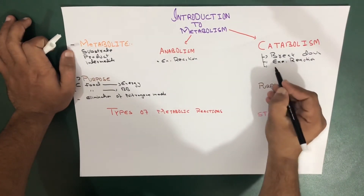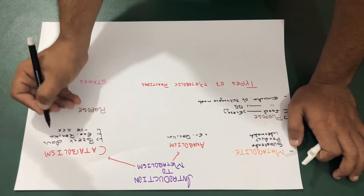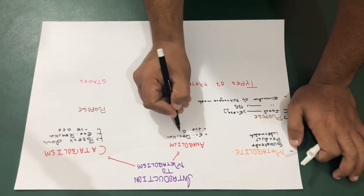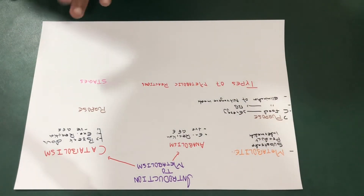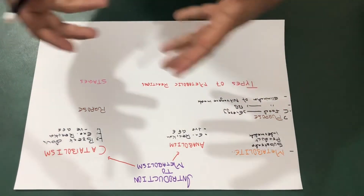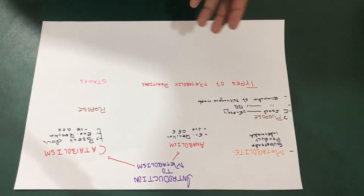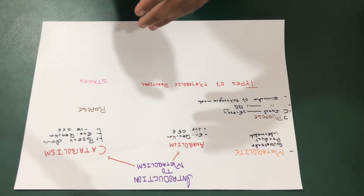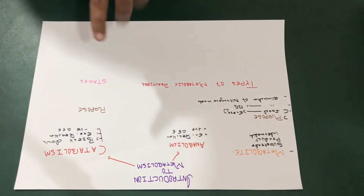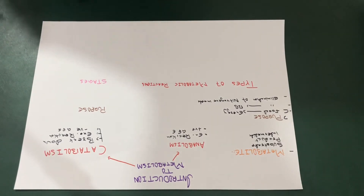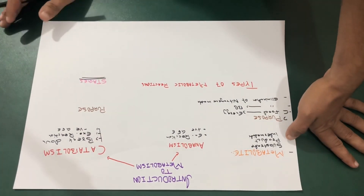Catabolism is an exergonic reaction — it has a negative Gibbs free energy. Anabolism, on the other hand, has a positive Gibbs free energy. The purpose of catabolism is to trap energy as ATP and generate substances required for synthesis of complete metabolites. There is a three-stage process through which catabolism proceeds — three stages to go through the process of catabolism.